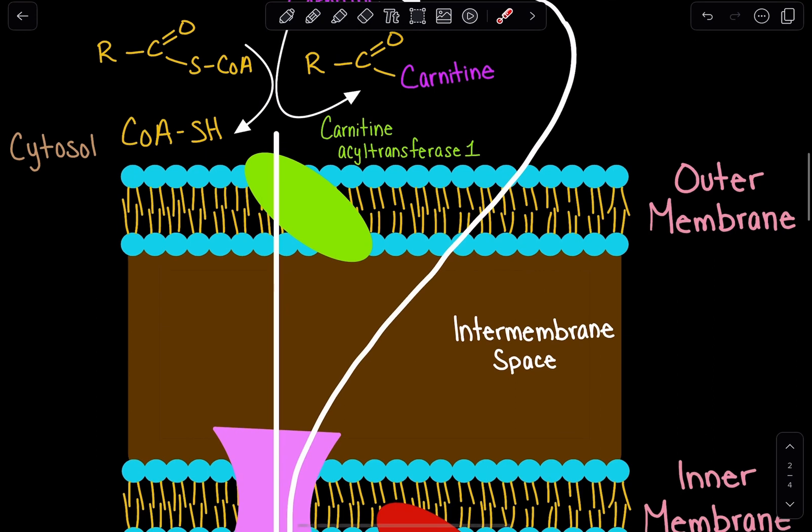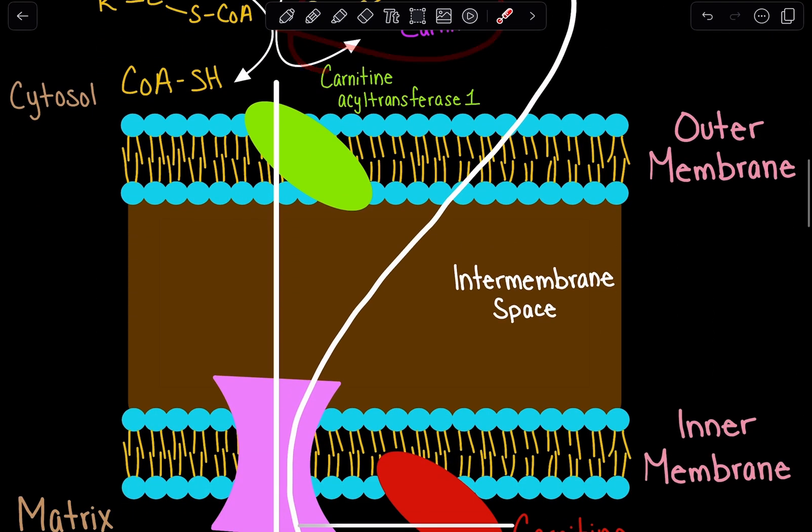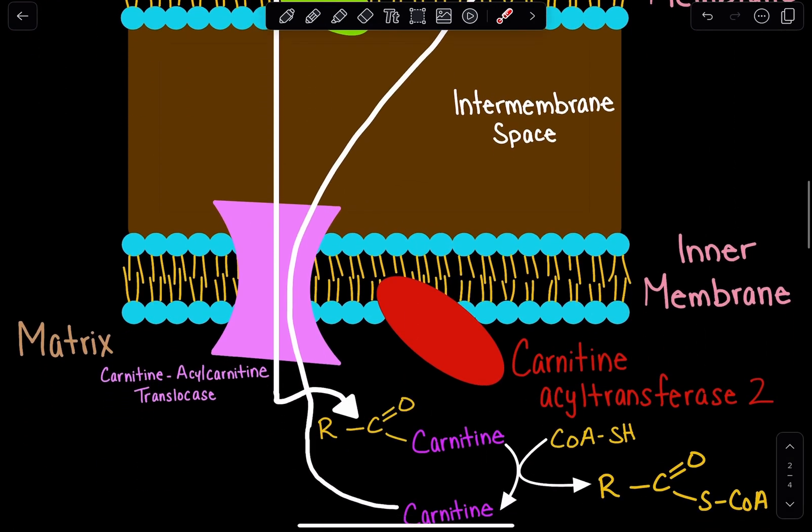As a result, this acyl-carnitine can be transported through that second membrane through a special transporter that we call carnitine acyl-carnitine translocase.